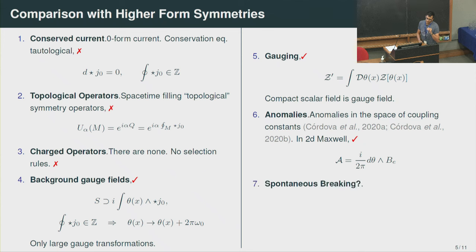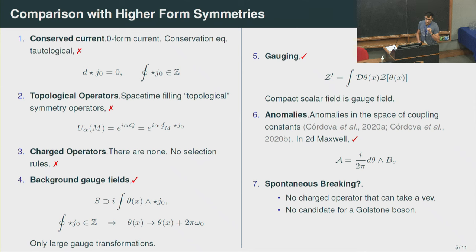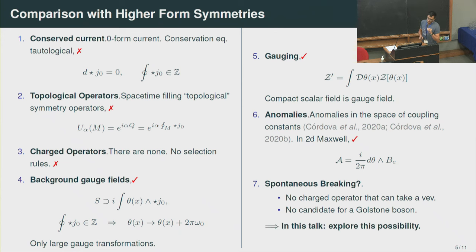What I want to address today is whether we can think about spontaneous breaking. You may think this is a bit of a long shot — there are no charge operators that can signal that the symmetry was spontaneously broken, and there is no candidate for a Goldstone boson. Let me go to the toy model, but first let me remind you about 4D Maxwell, which has an electric one-form symmetry and a magnetic one-form symmetry. They are both spontaneously broken, and the photon is understood as the Goldstone of this spontaneous breaking.